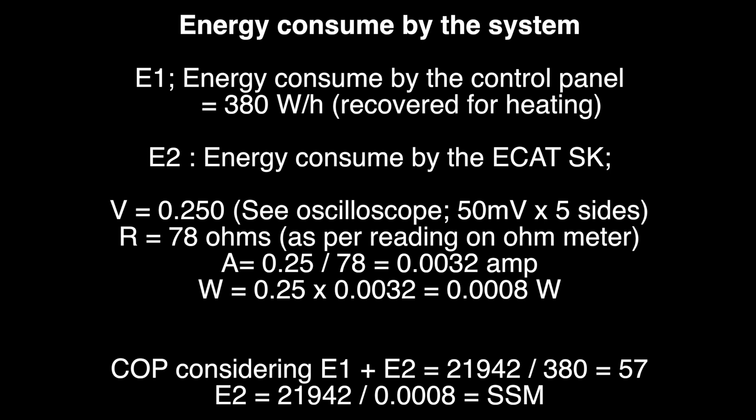When we make the calculation of watts, we get 0.25 times 0.0032, which equals 0.0008 watt hours per hour. Therefore, the ECAT consumes 0.0008 watt hours per hour.